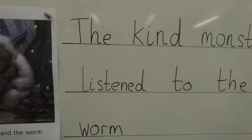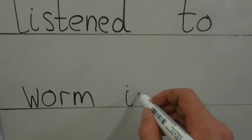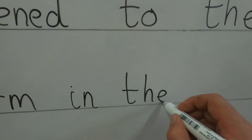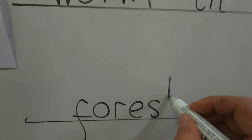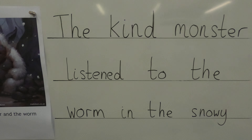Now the title of this picture is 'The Monster and the Worm.' What can we say about the picture? We've got a monster — but a happy monster, a smiling monster, a kind-looking monster. And a bird. Where are they? In the forest, in the woods. What else can we say? It's definitely snowing. That's a good thing to say — we could talk about the snow.